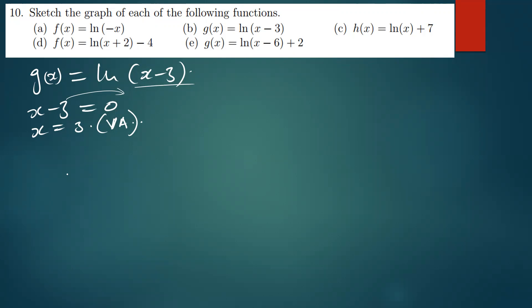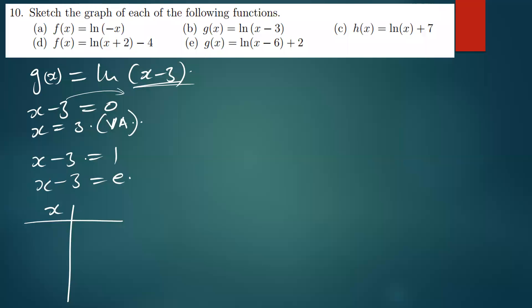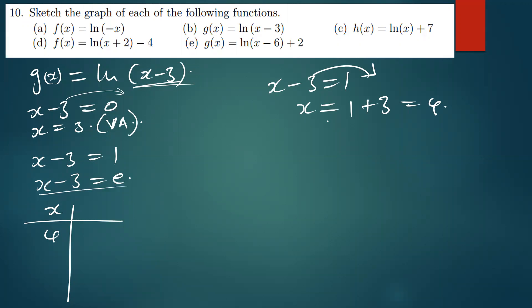We find the x-values for the table by equating x minus 3 to one and to e (approximately 2.7). Equating to one: x equals 1 plus 3, so x equals 4. Equating to e: x equals e plus 3, which is also 2.7 plus 3, giving approximately 5.7.